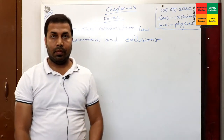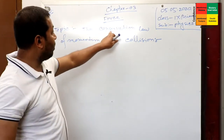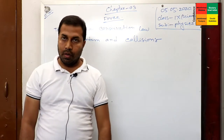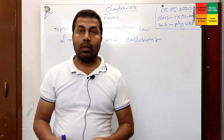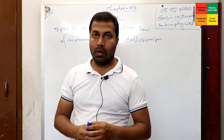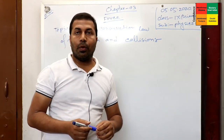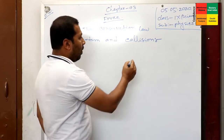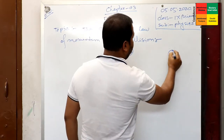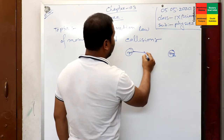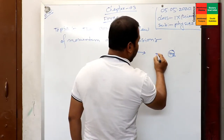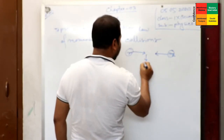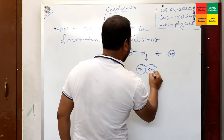First of all, what is conservation? You already know what momentum is. Now, what is collision? When two bodies hit each other, this event is known as collision. It may be that the direction of motion is opposite to each other, or the direction of motion may be the same. For example, one body of mass m1 and another body of mass m2 — one is moving along this direction and another body m2 is moving in this direction, and after some time they will hit each other.